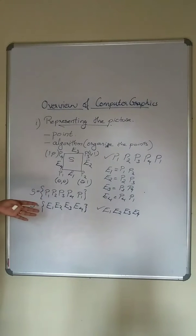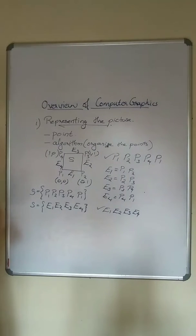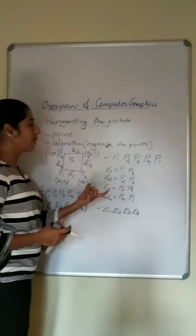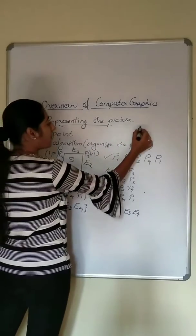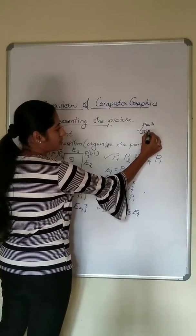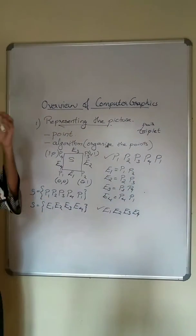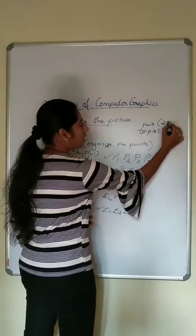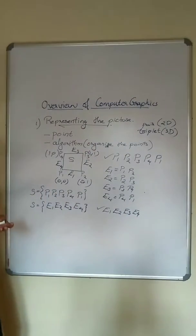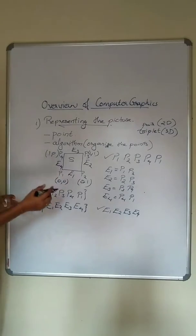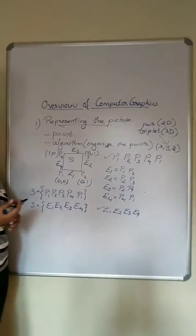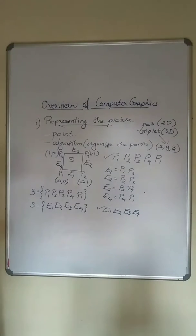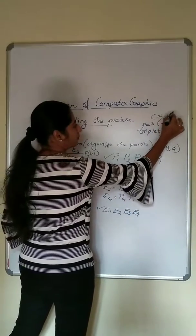The unit square can be represented with points or with edges. The basic building block is the point of a picture, and this point can be represented as either a pair or a triplet. A pair is for two-dimensional and a triplet is for three-dimensional. For 3D, we have three coordinate points X, Y, Z — a triplet. For 2D, we have the pair X, Y.